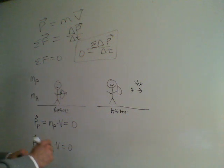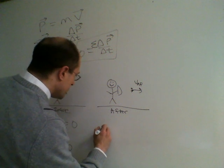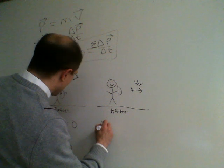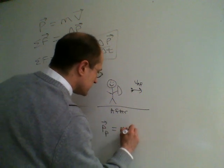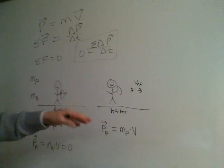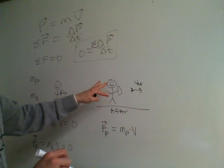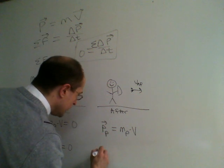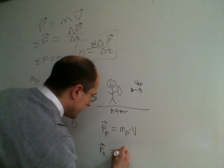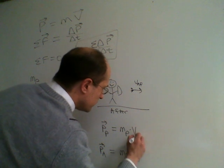Afterwards, the momentum of the person is mass of the person times their velocity after. We don't yet know what's happening with the person. And the momentum of the arrow is mass of the arrow times the velocity of the arrow after.